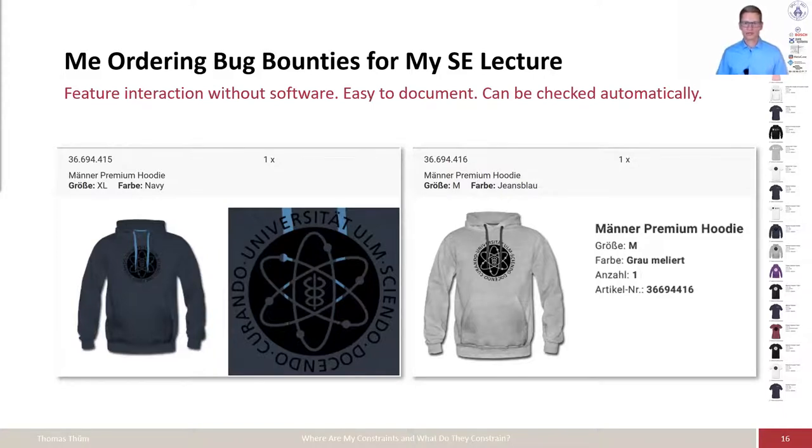The problem was that some of the foregrounds and backgrounds were simply too close enough from the color that you could not see the logo. That's what they warned me about, but pretty late in the process, not during the configuration at the website, and not for the students, but rather in the process of ordering. So this feature interaction has nothing to do with software. It is easy to document and could be easily checked automatically.